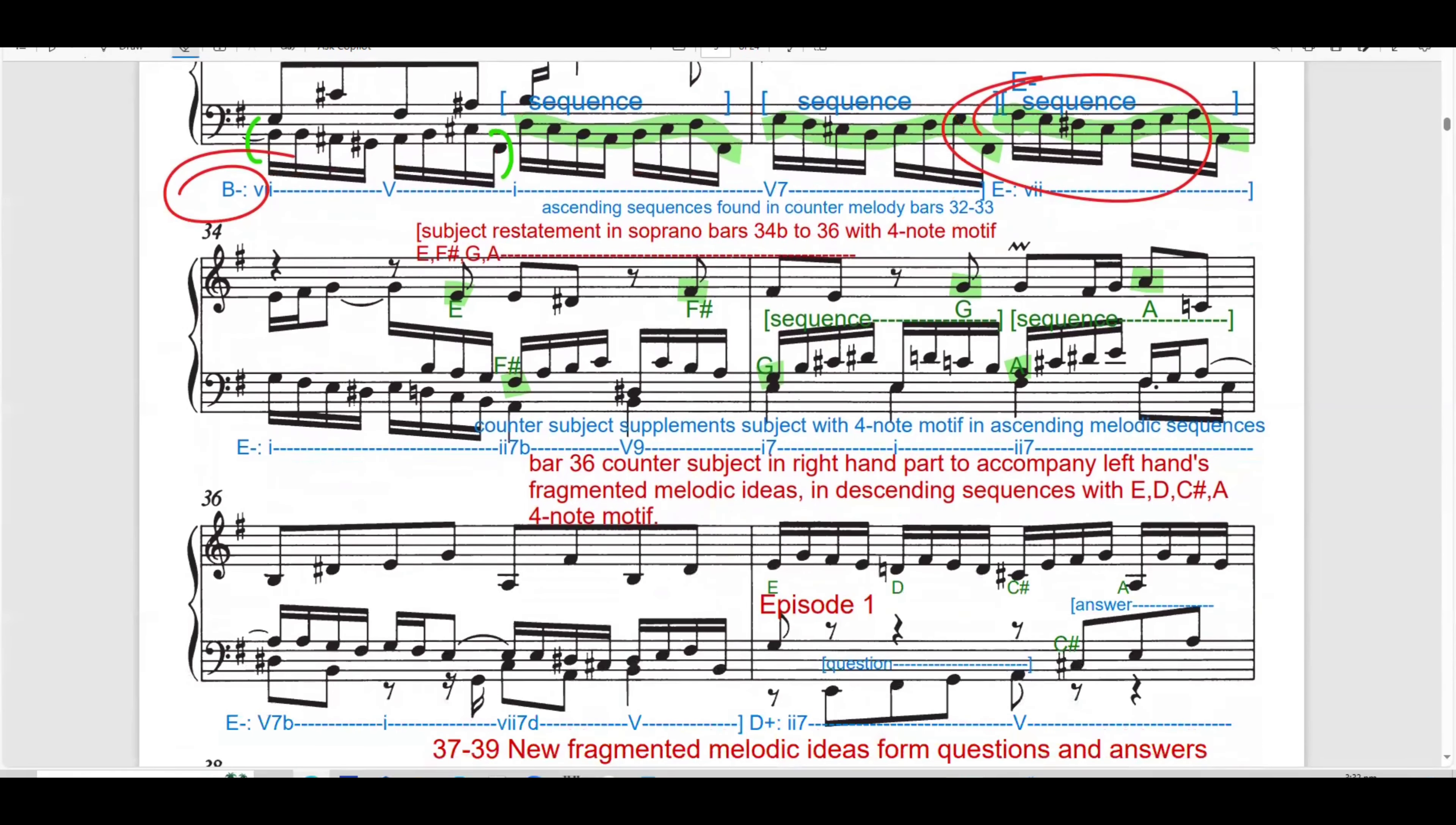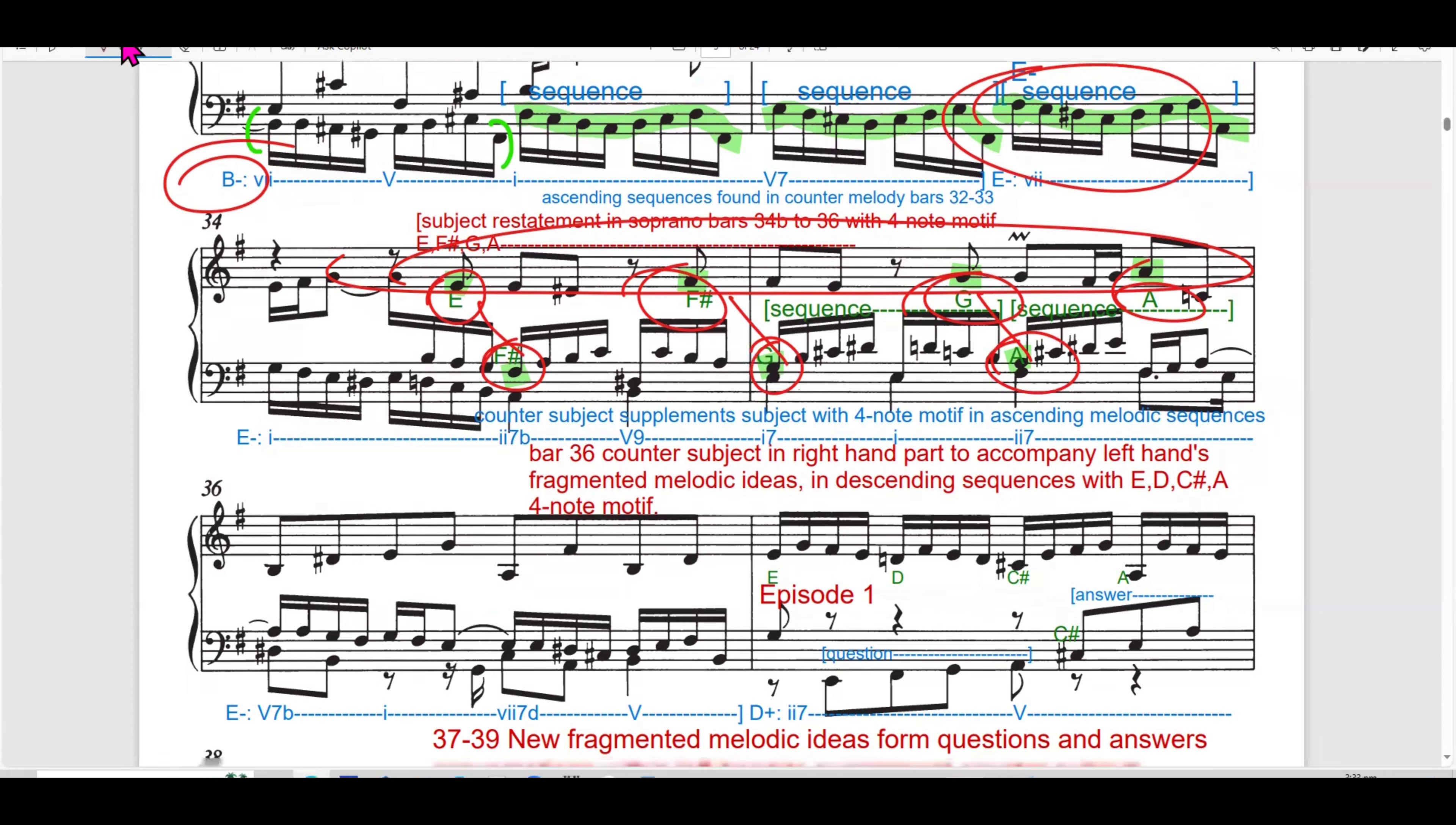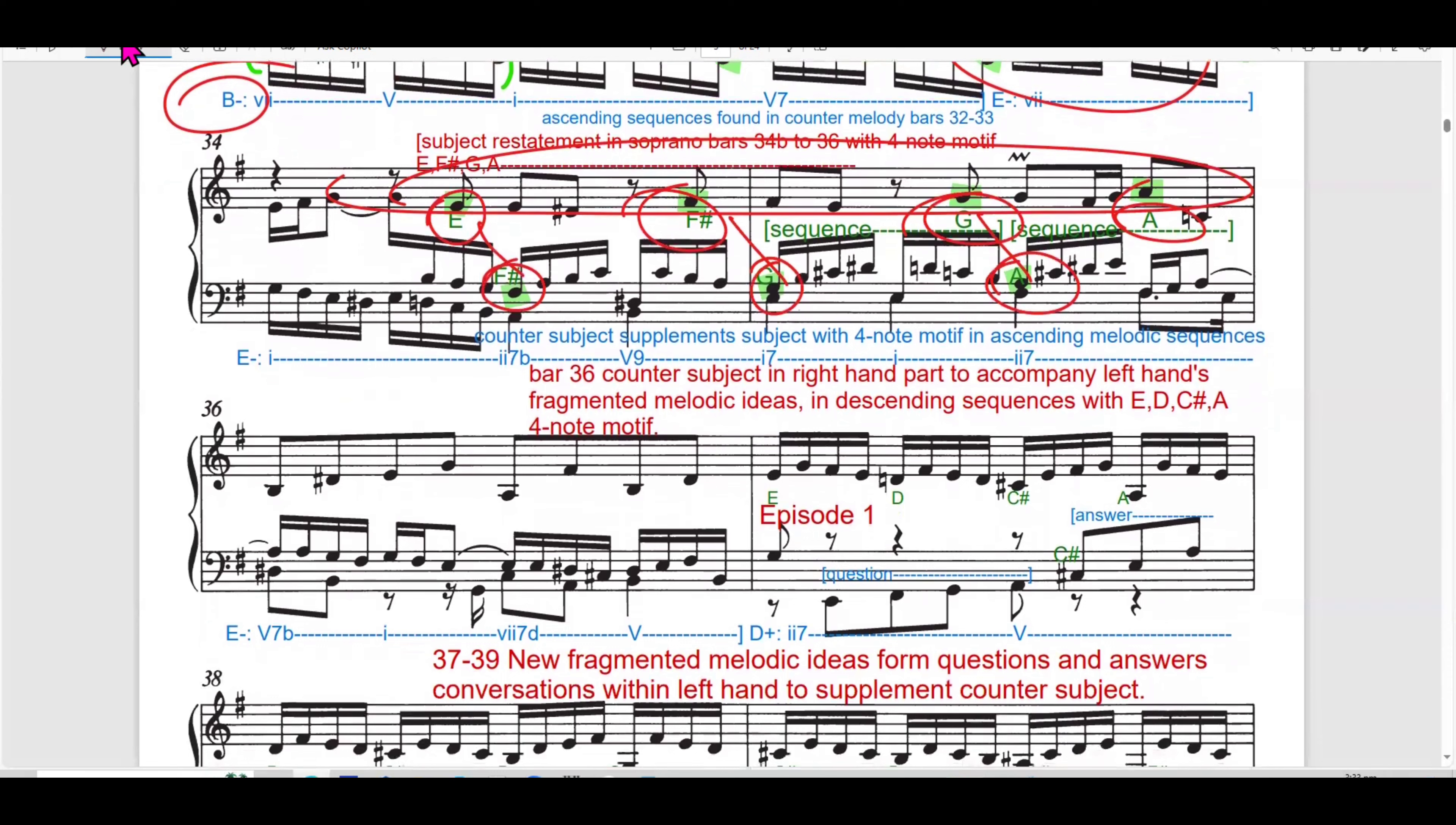This is the answer to the upbeat of bar 29 to 32 with the four-note motif B, C-sharp, D, and E. Shifting the tonality to B minor, dominant minor to E minor. The counter subject in the bass voice supports the answer. So this is the counter subject that supports the answer. So the melody that supports the answer is the counter subject.